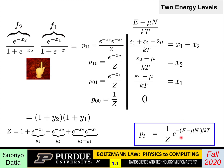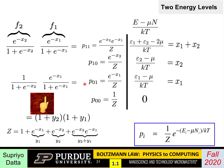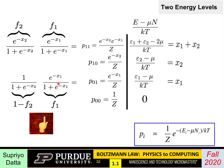Similarly, p_01 has only e to the power minus x_1 in the numerator — not e to the power minus x_2 — and simplifies to f_1 times (one minus f_2). This also makes sense: the probability level one is full is f_1, and the probability level two is empty is one minus f_2. You can work out p_10 and p_00 similarly and get the expected answers.